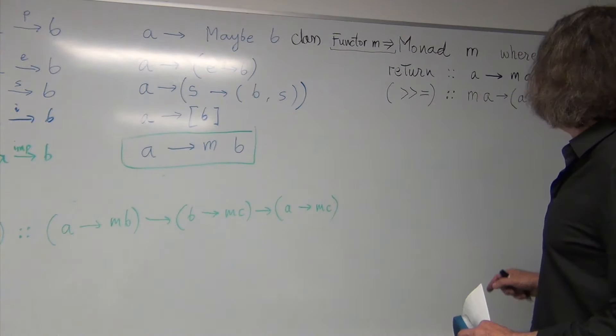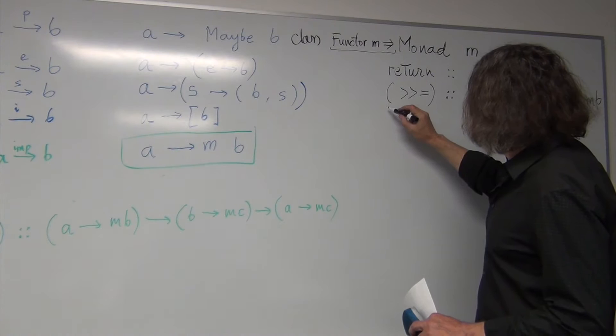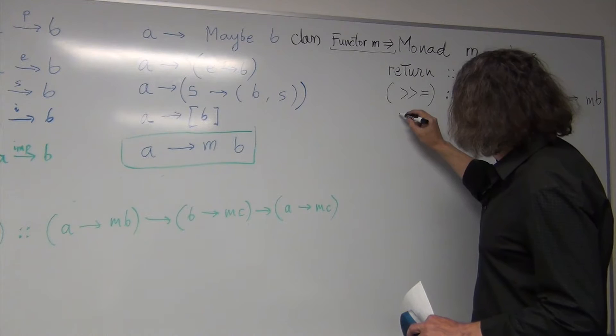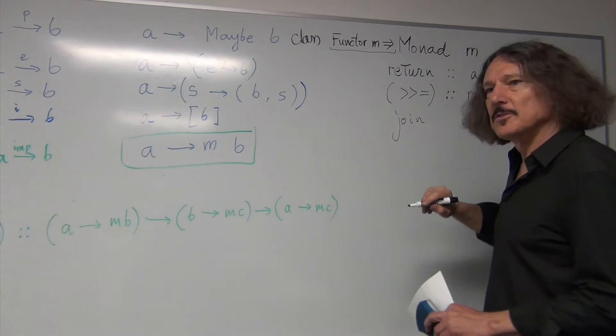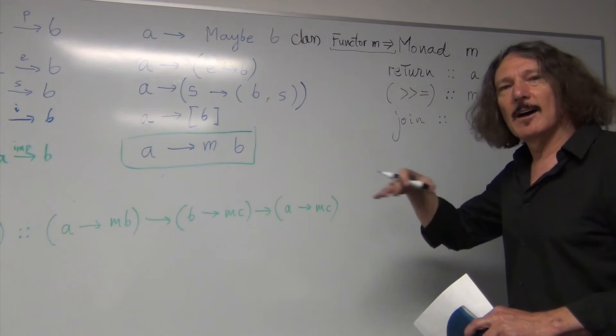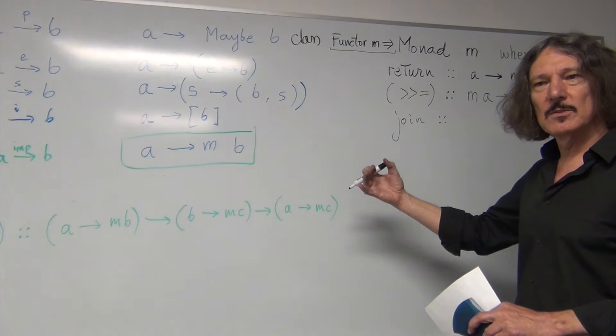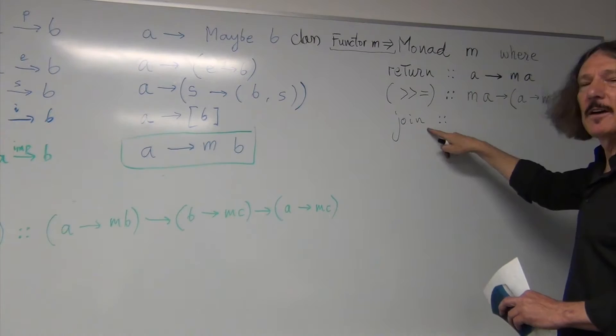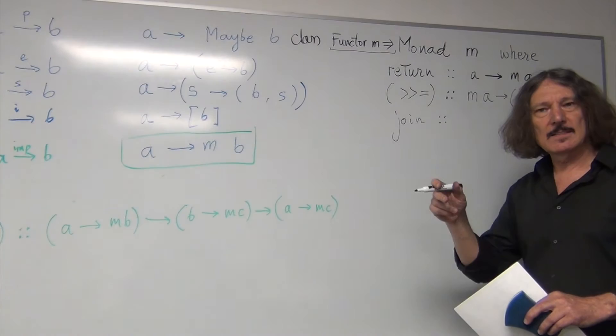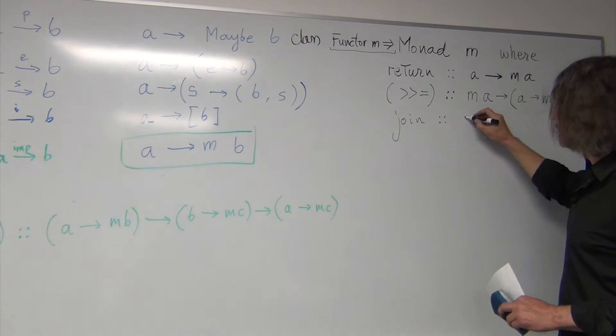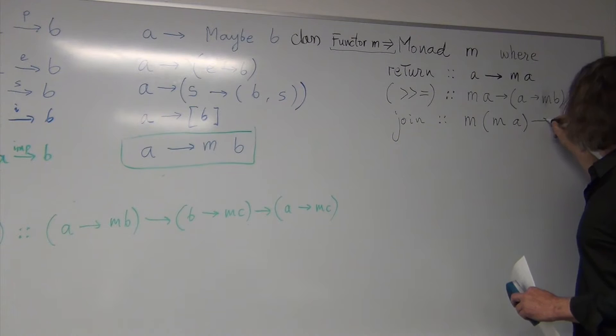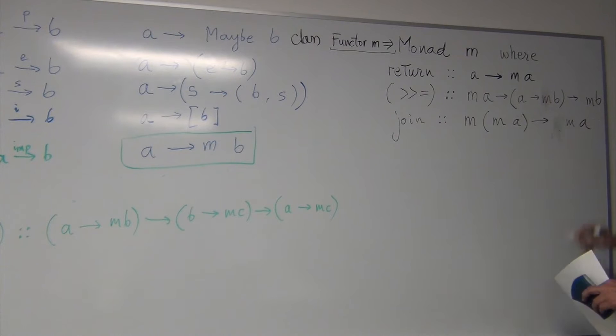But there is another definition that sort of is more useful in the case of lists. And we actually used it. It was, instead of having the bind operator, what you really need is join. Now, join is a function that's the generalization of this concatenation thing. Because we said, we can use concatenation to define the fish.